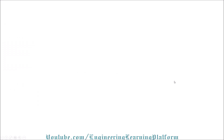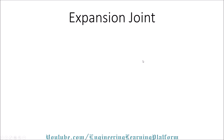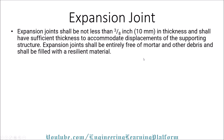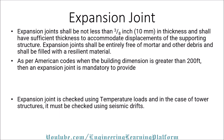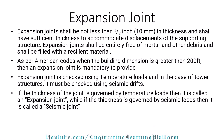Hello everyone. In this lecture we will learn how to calculate expansion joint for a structure. Expansion joint shall not be less than 3/8 inches or 10 mm in thickness and shall have sufficient thickness to accommodate displacement of the supporting structure. Expansion joint shall entirely be free of mortar and other debris and shall be filled with a resilient material. As per American codes, when building dimension is greater than 200 feet, an expansion joint is mandatory. Expansion joint is checked using temperature loads, and in case of tower structures it must be checked using seismic drifts.